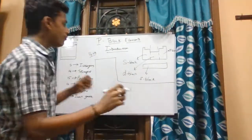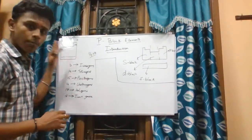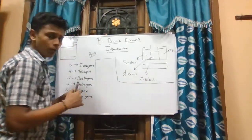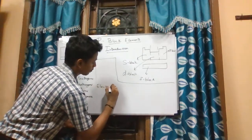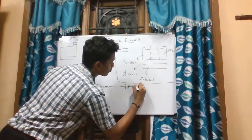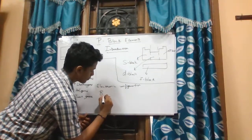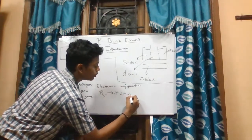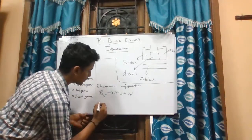Have you ever wondered why these elements are characterized in the P-block? Let me explain with a simple example using electronic configuration. The electronic configuration of boron (atomic number 5) is 1s² 2s² 2p¹. The electronic configuration of oxygen is...